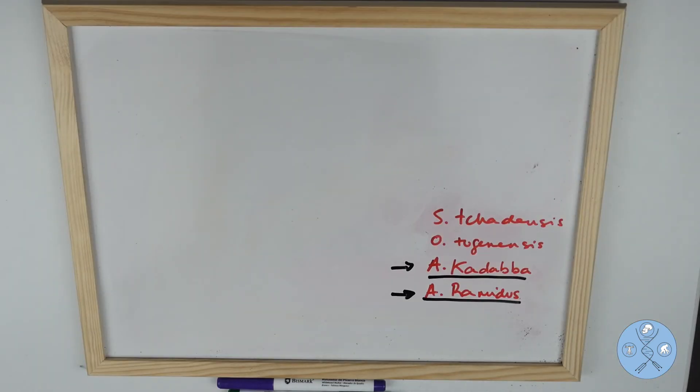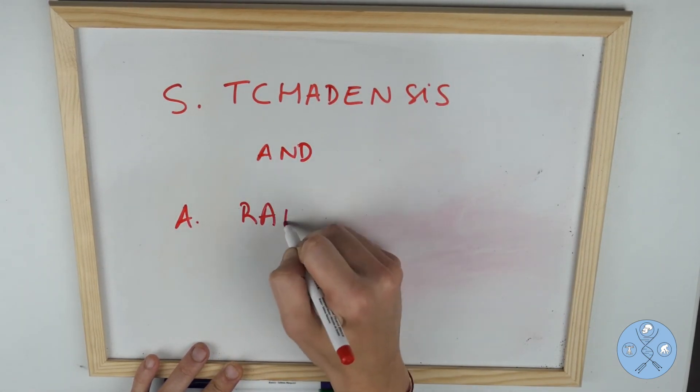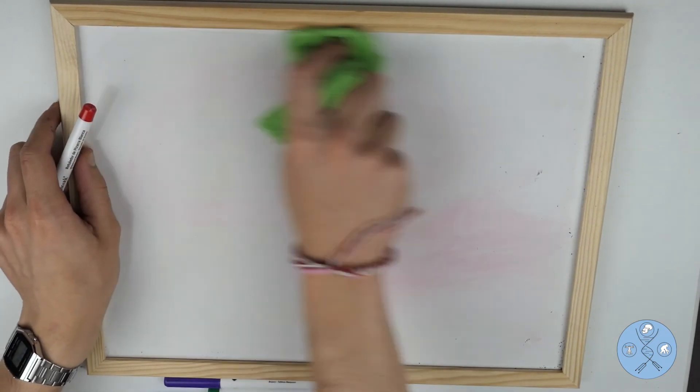So, to sum up, out of the four potential hominins, Sahelanthropus tchadensis and Ardipithecus ramidus have the strongest cases for being included in the hominin clade.